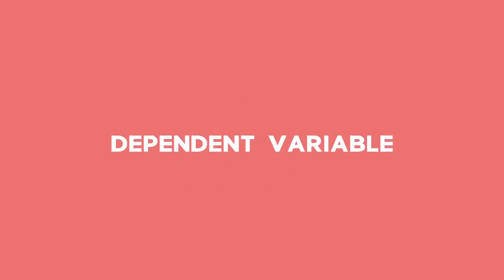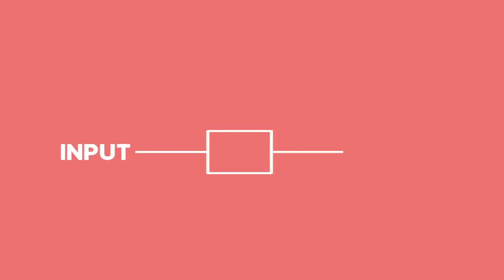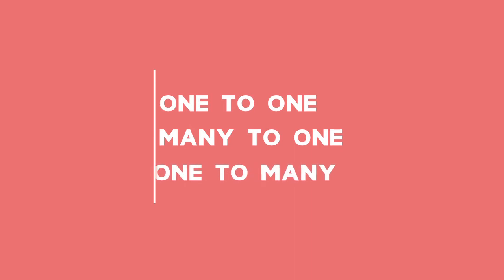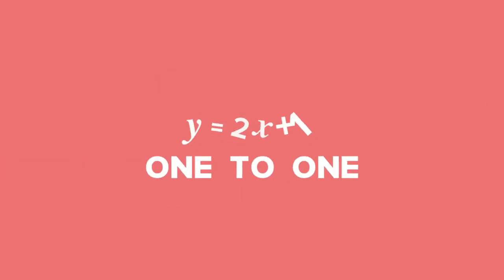A common way to represent a relation is by mapping the input and output in a diagram. There are three common types of mapping: one-to-one, many-to-one, and one-to-many. An example of a one-to-one mapping is Y equals 2X plus 1. There is one X value for each Y value.